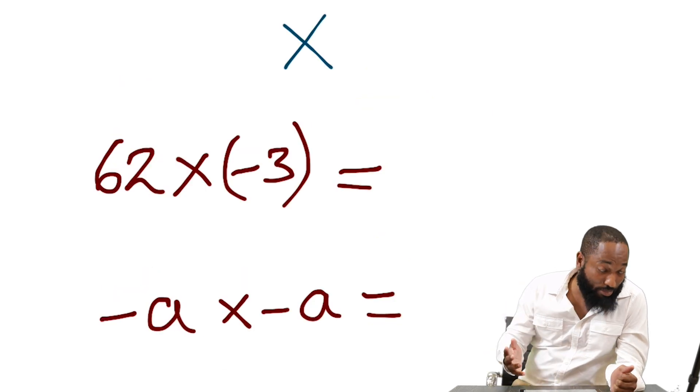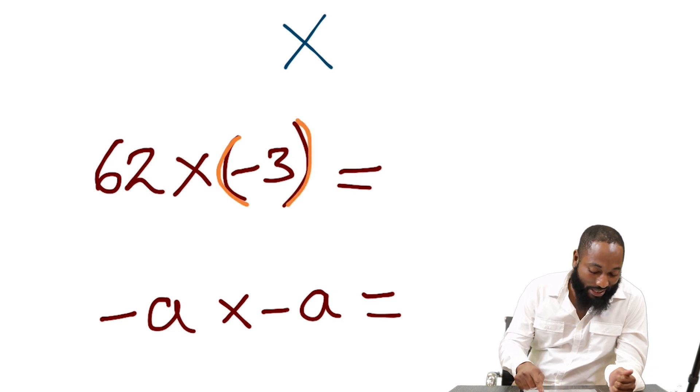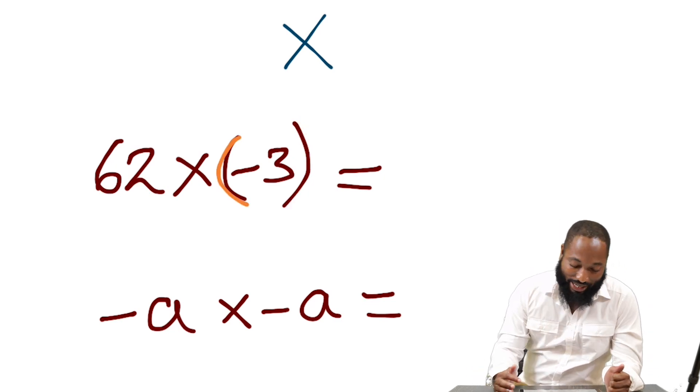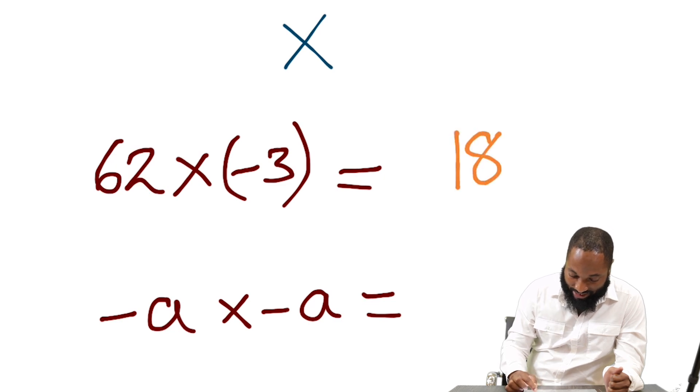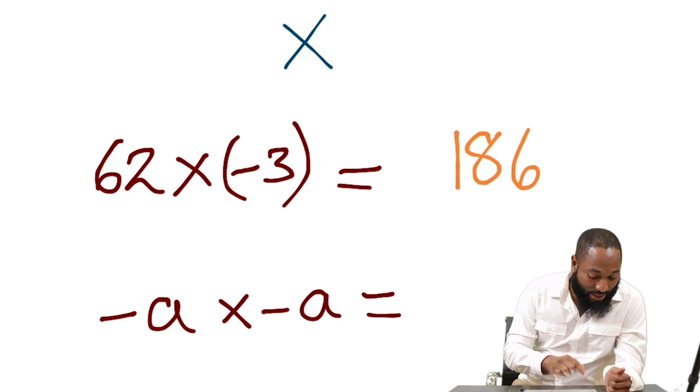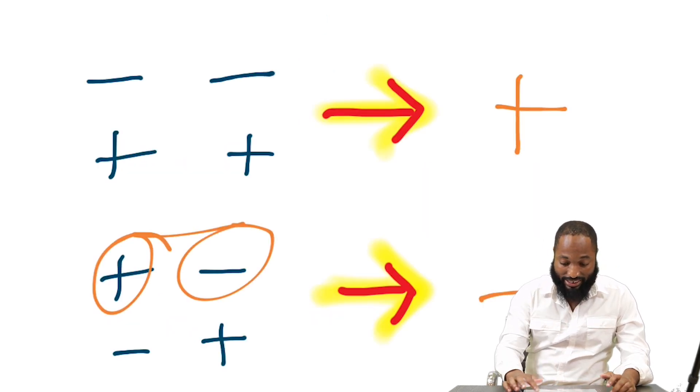That rule works when you're multiplying numbers. So this is a positive number by a negative number. Notice how out of respect we put the negative number in brackets. So it's 62 times 3, which is 186. But because one of the numbers is positive and one is negative, the answer is negative according to this rule.